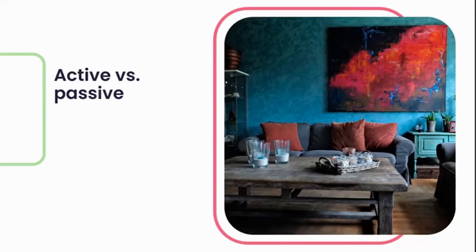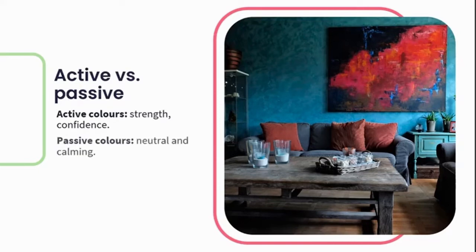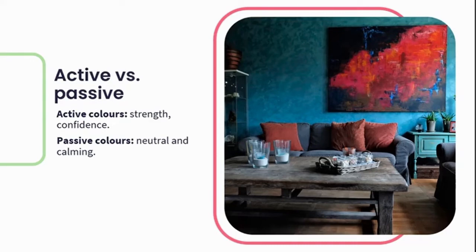Colors have two behavioral types in general. First, we have active colors, commonly associated with traits like strength, confidence, enthusiasm, and exuberance. These vibrant colors instill a sense of activity within the space — your reds, yellows, and greens. Then we have passive colors, your more neutral and toned-down colors. These tend to promote mental focus and have a calming effect, bringing about a sense of balance and often used to offset your active colors.